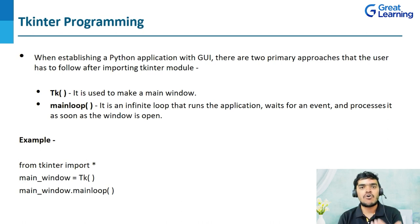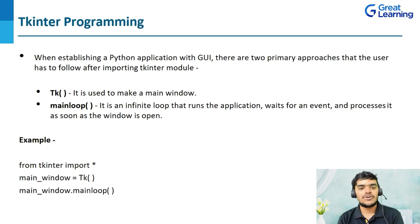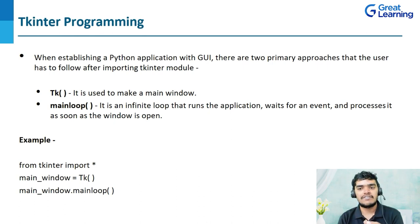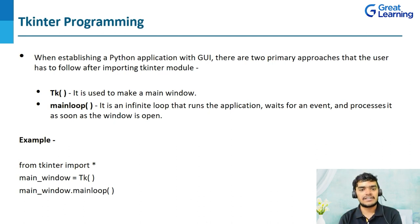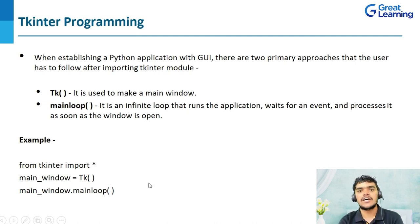The main loop is an infinite loop that runs the application, waits for an event, and processes it as soon as the window is open. If you are not closing your window, whatever widgets you put inside the main window will be executed. Widgets should be placed between the main window creation and the mainloop call. Tkinter offers many controls known as widgets — buttons, labels, and text boxes. Types of widgets include check button, canvas, frame, entry, button, and label.